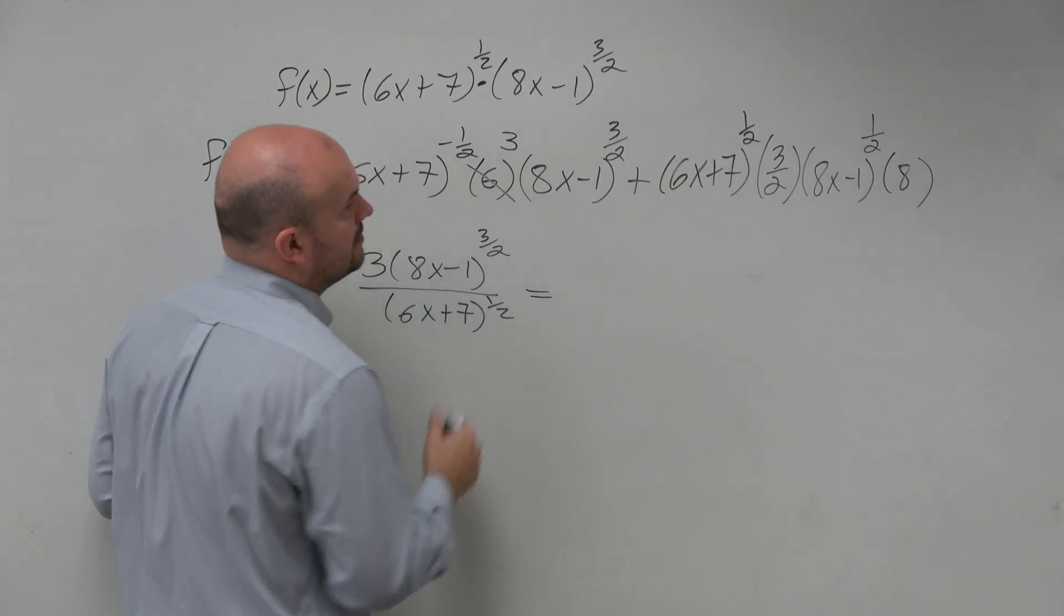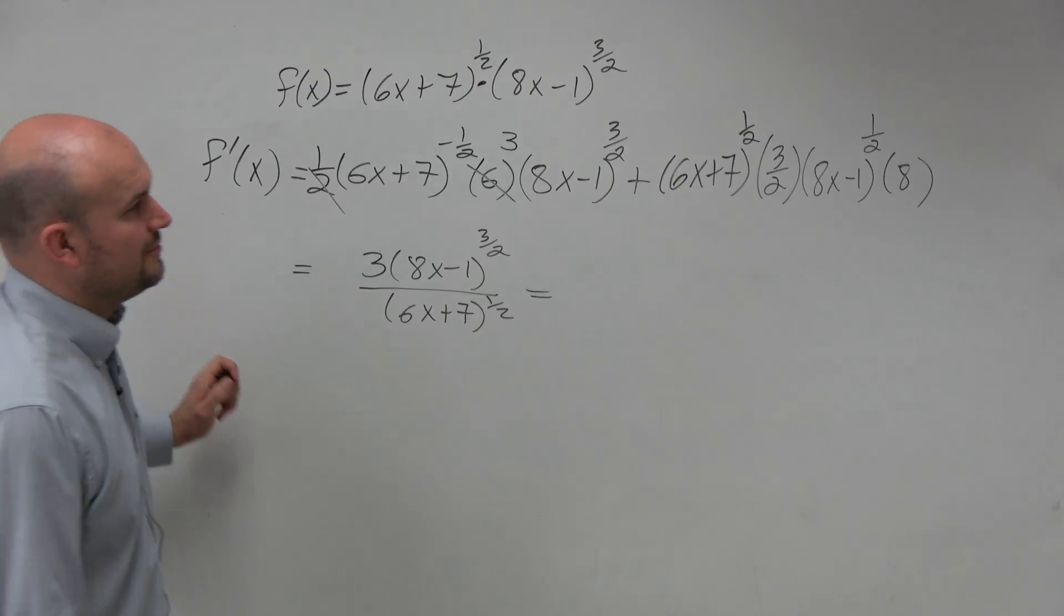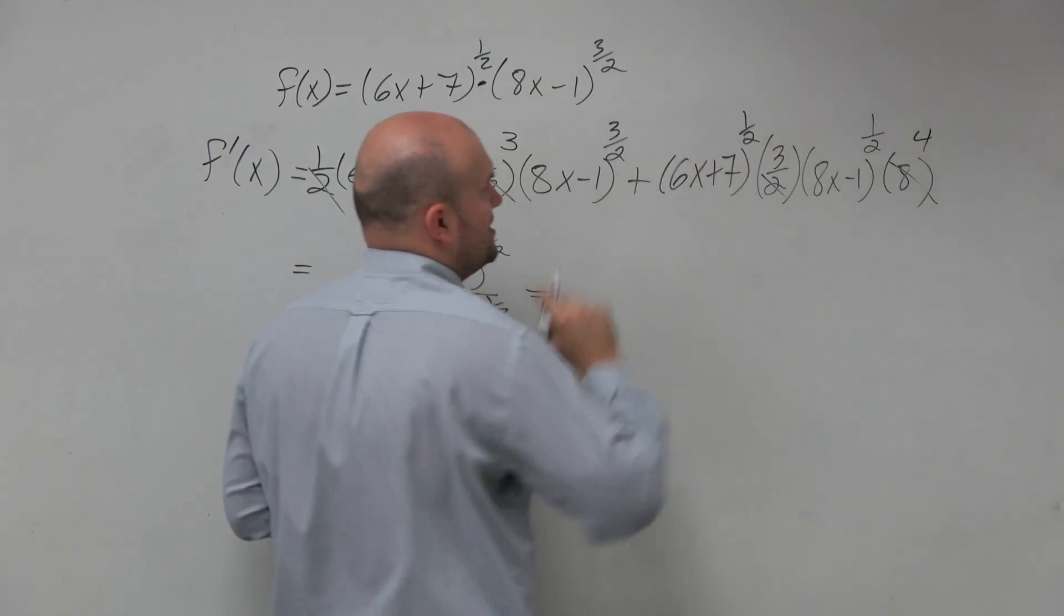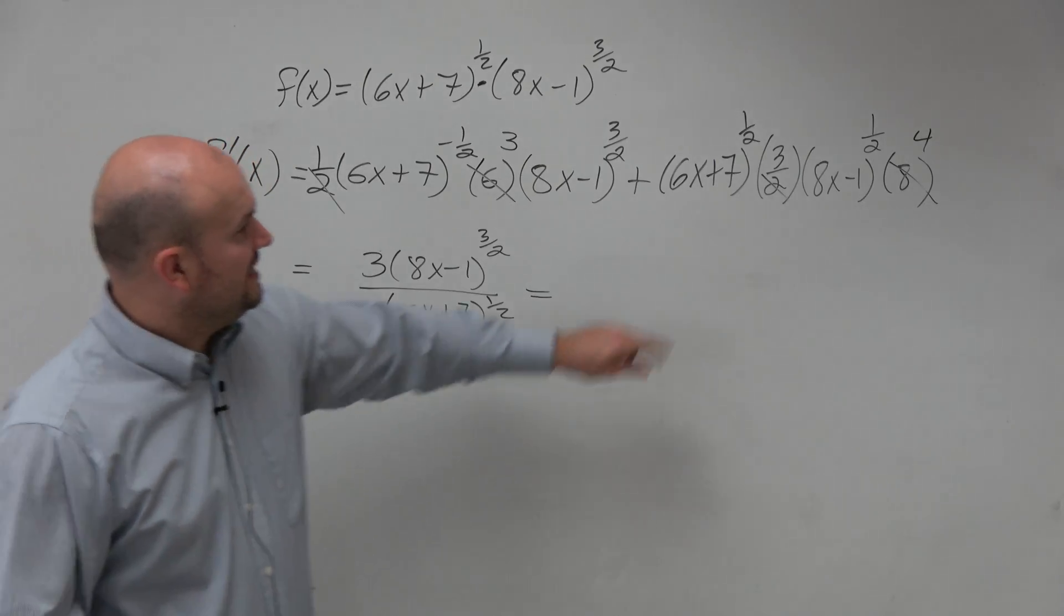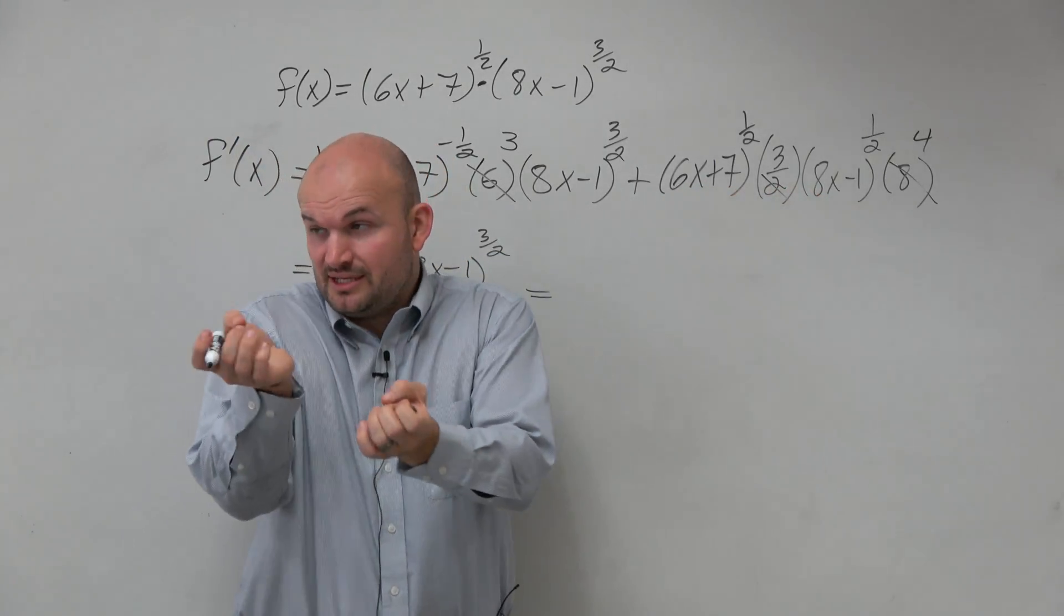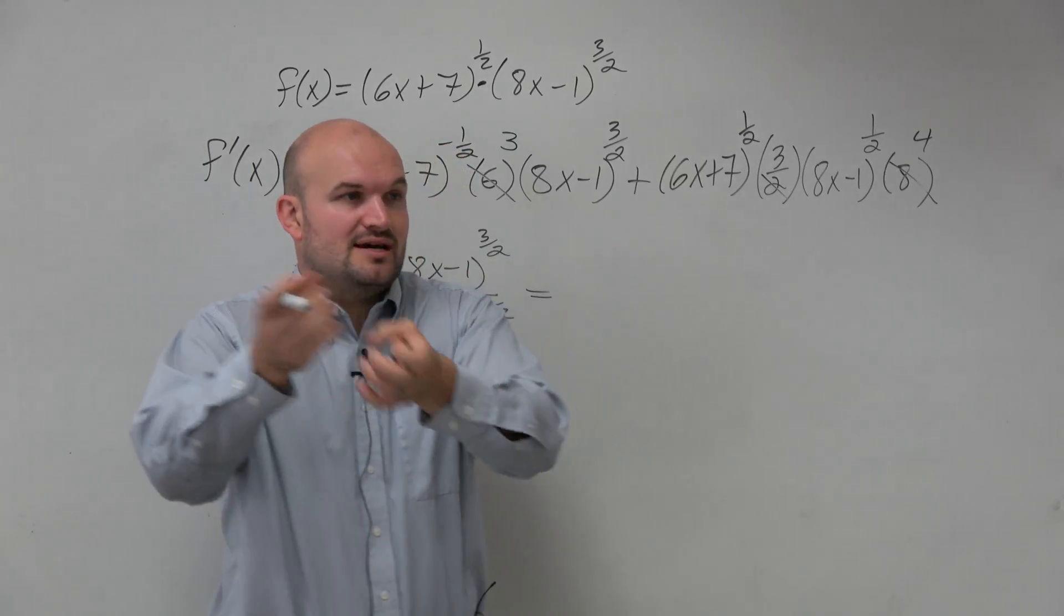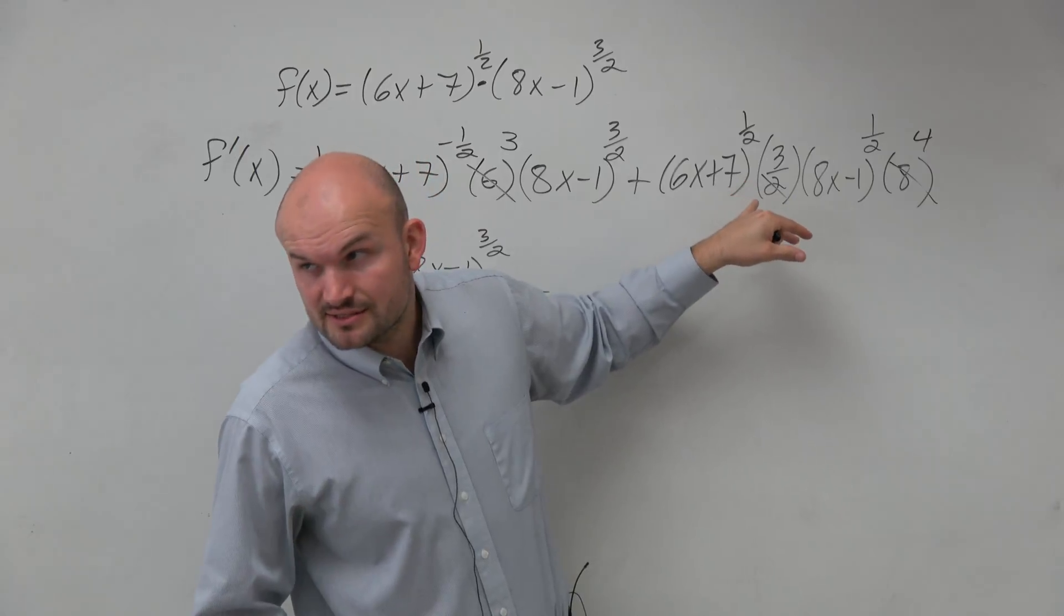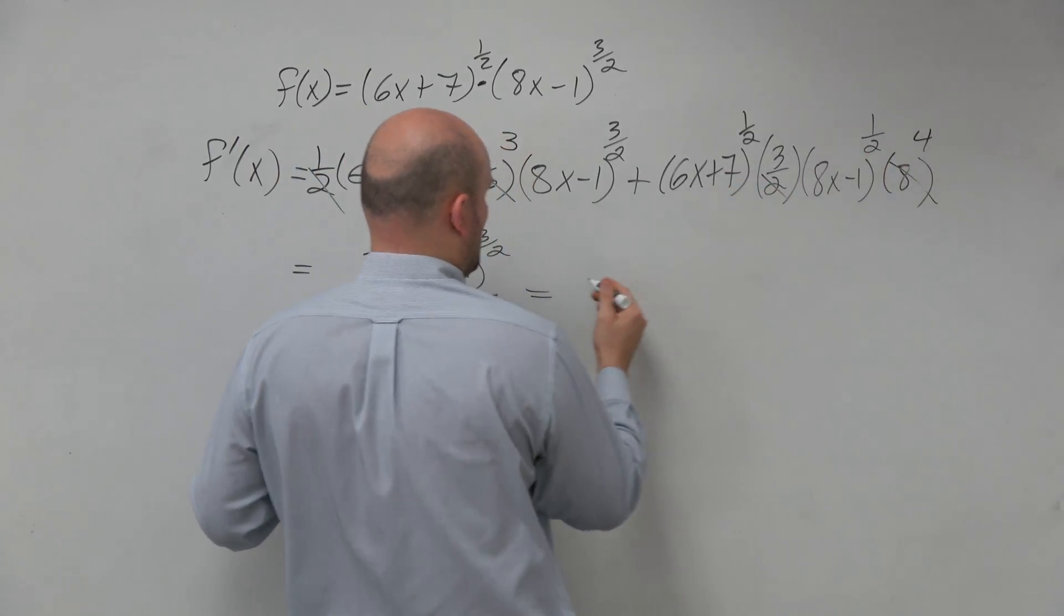We look over here, and we know that 2 divides into 8 four times. 4 times 3 is 12. These do not have the same base, so I can't multiply them, right? Remember, rules of exponents, x squared times x cubed is x to the 5th. You add the powers. Well, here, they're not the same base, so you can't do that. But we can do 3 times 4.